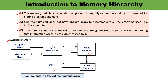In this diagram, the main memory occupies a central position — it is capable of communicating directly with the CPU and with the auxiliary memory via the I/O processor. So main memory can communicate with the CPU as well as auxiliary memory. When programs are not residing in main memory, they are brought in from auxiliary memory via the I/O processor.